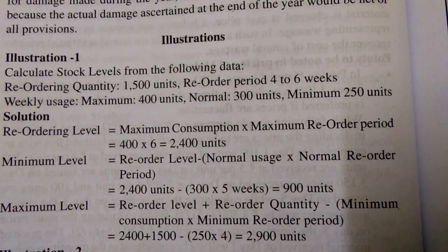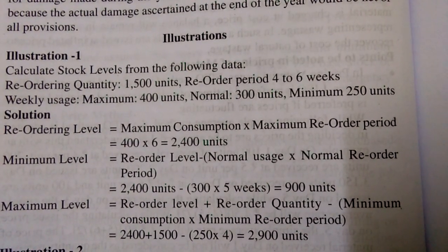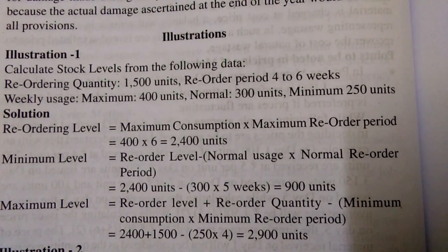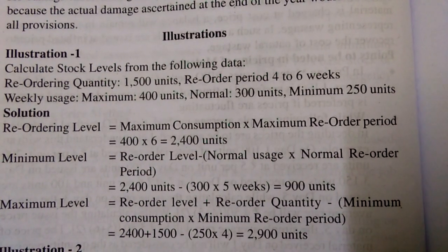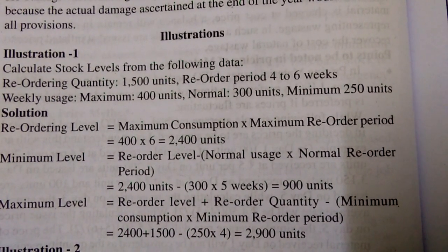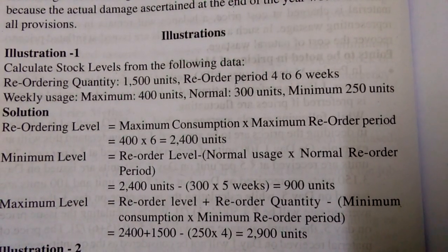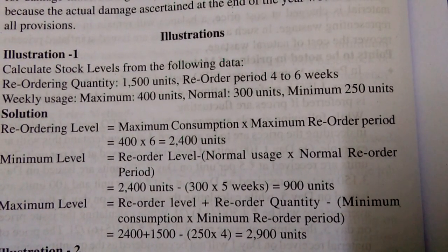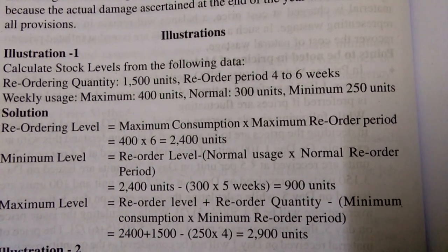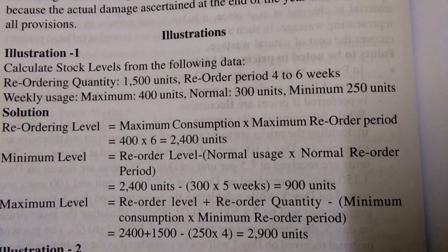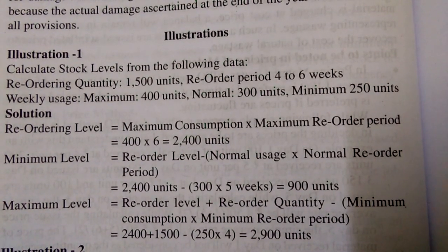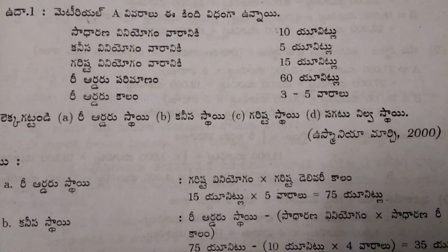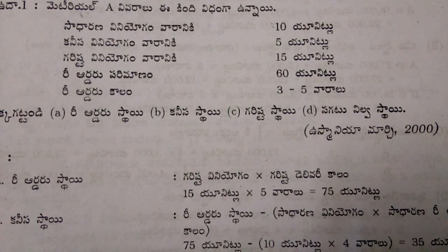Maximum level equals reorder level plus reordering quantity minus minimum consumption into minimum reorder period. That is 2400 plus 1500 minus 250 into 4 weeks. 2400 plus 1500 equals 3900, minus 250 into 4 equals 1000, so totally 2900 units.